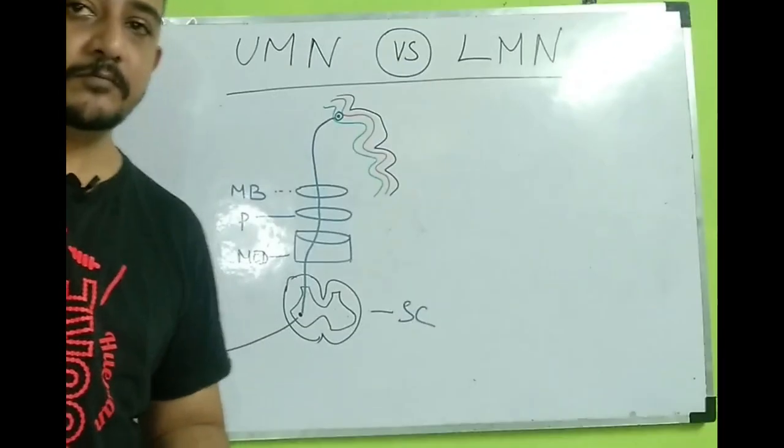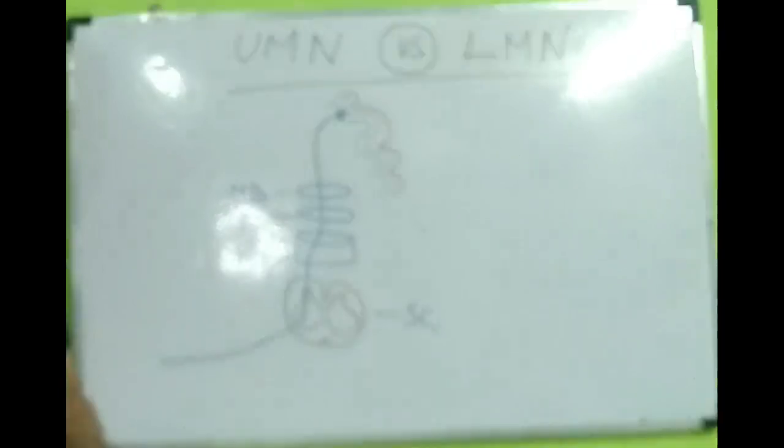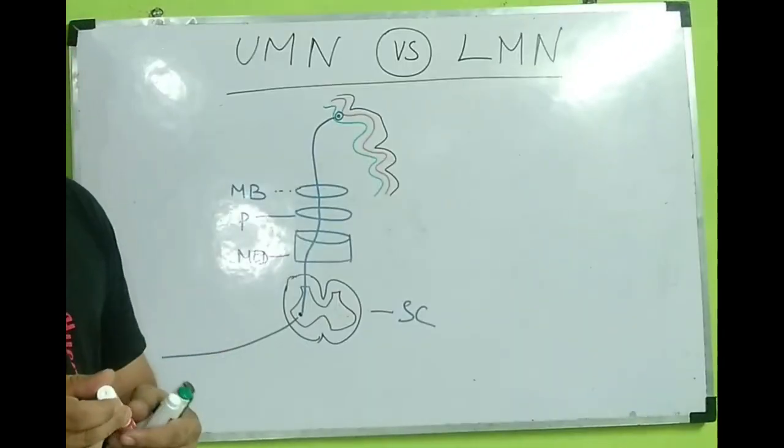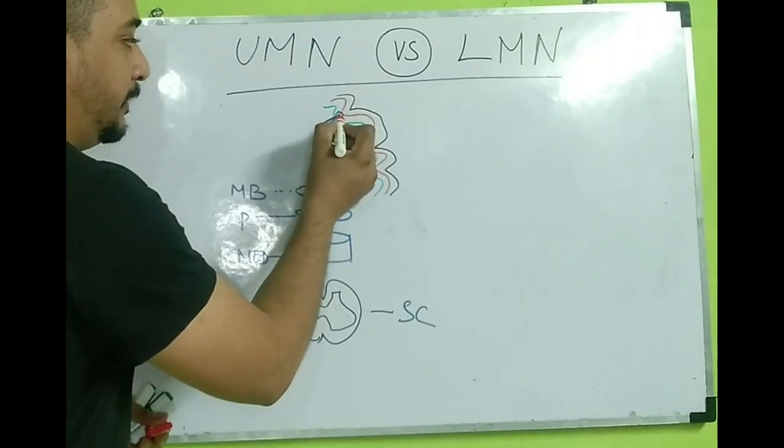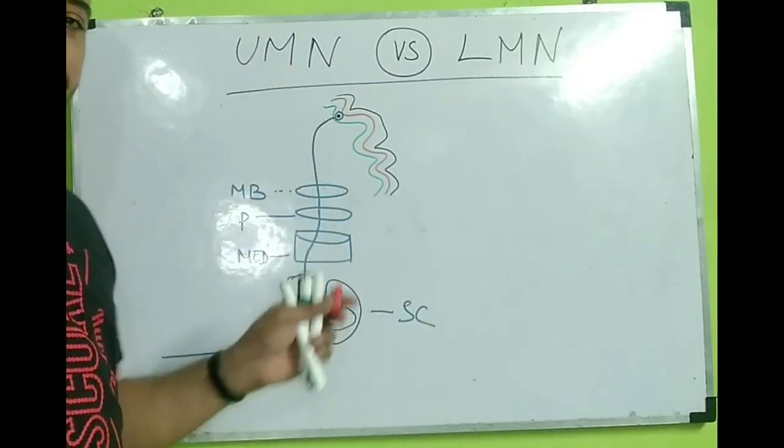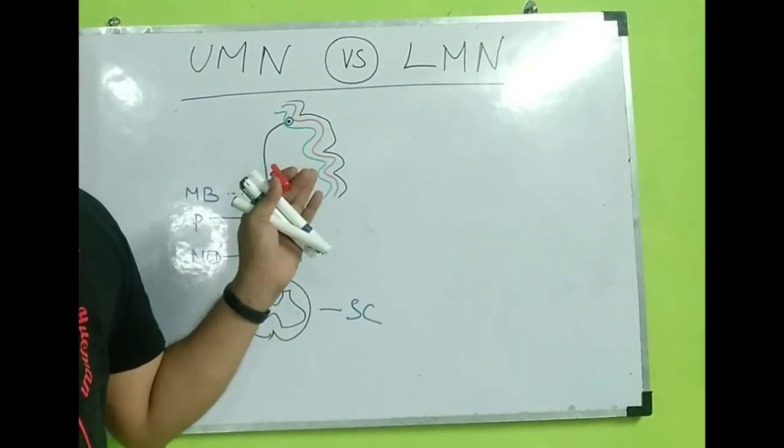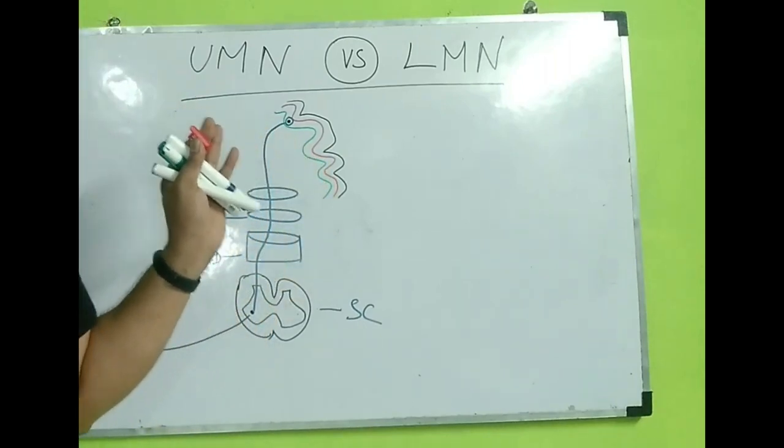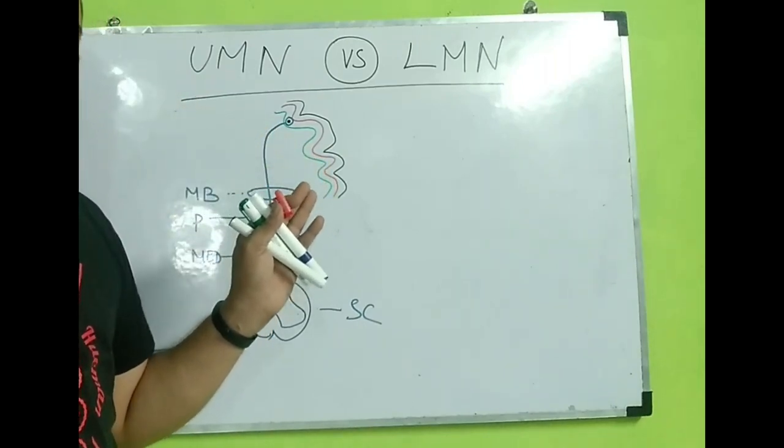Right now what we see here, there are two motor neurons located, one in the brain. This is the motor neuron, this is called as the pyramidal cells or the giant cells which are present in one of the layers of the cerebral cortex.